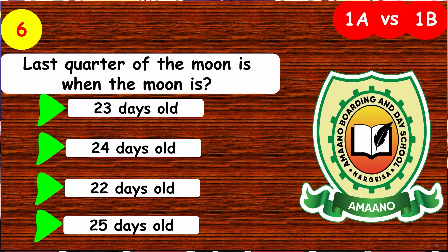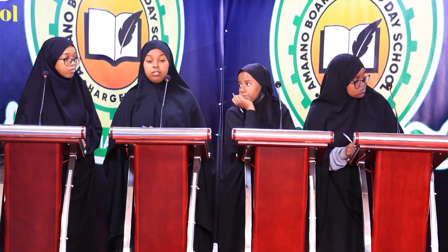Number six, this is a geography question. The last quarter of the moon is when the moon is A, 23 days old; B, 24 days old; C, 24 days old; D, 25 days old. The answer is C. That's correct.